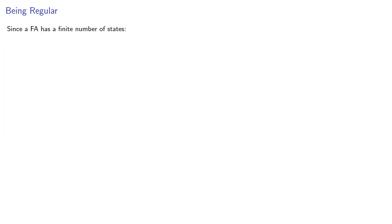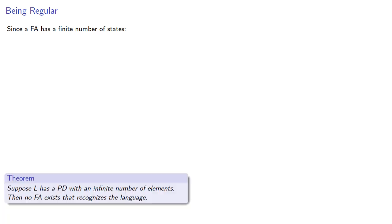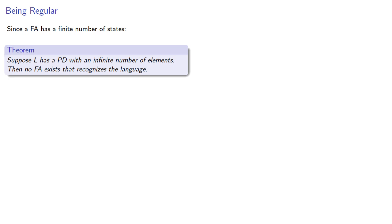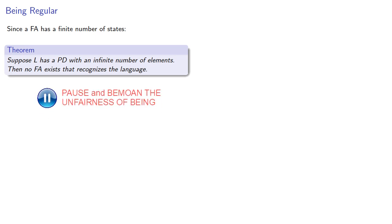Since a finite automaton has a finite number of states, this implies the following: suppose we have a language and a pairwise distinguishable set with an infinite number of elements, then no finite automaton exists that recognizes the language. So the natural question to ask is: are there such languages?